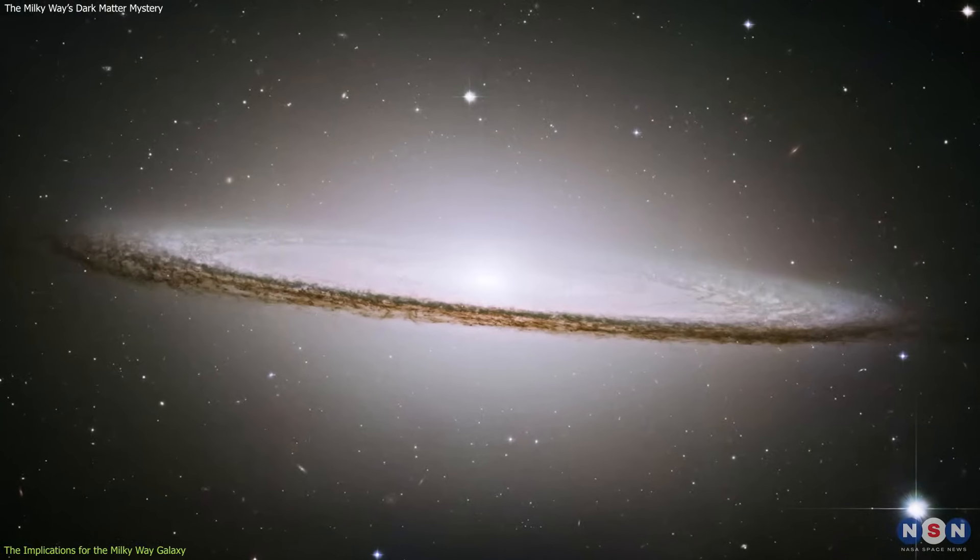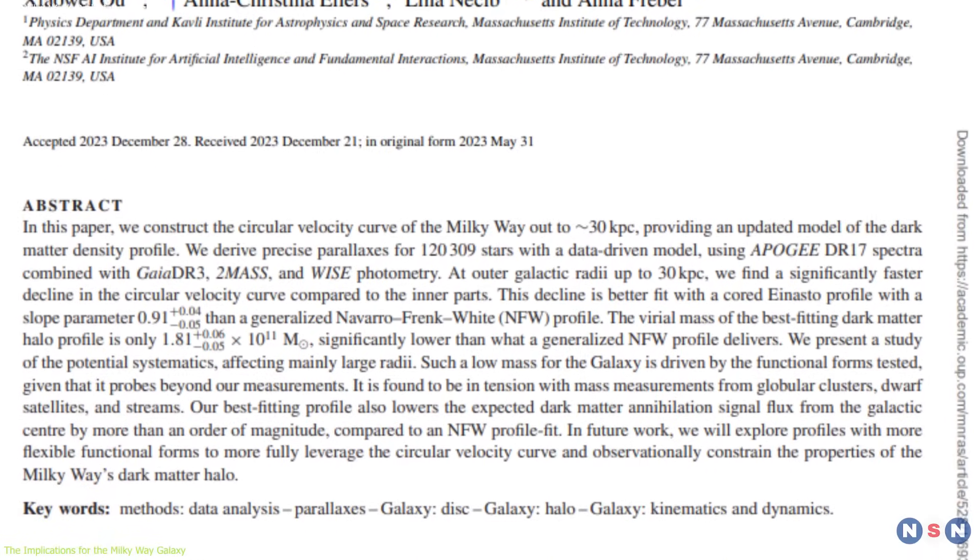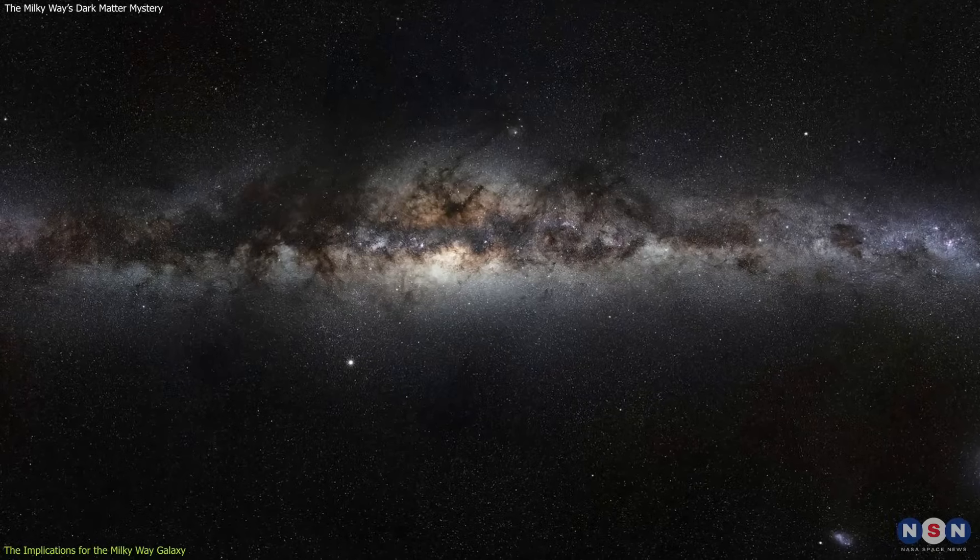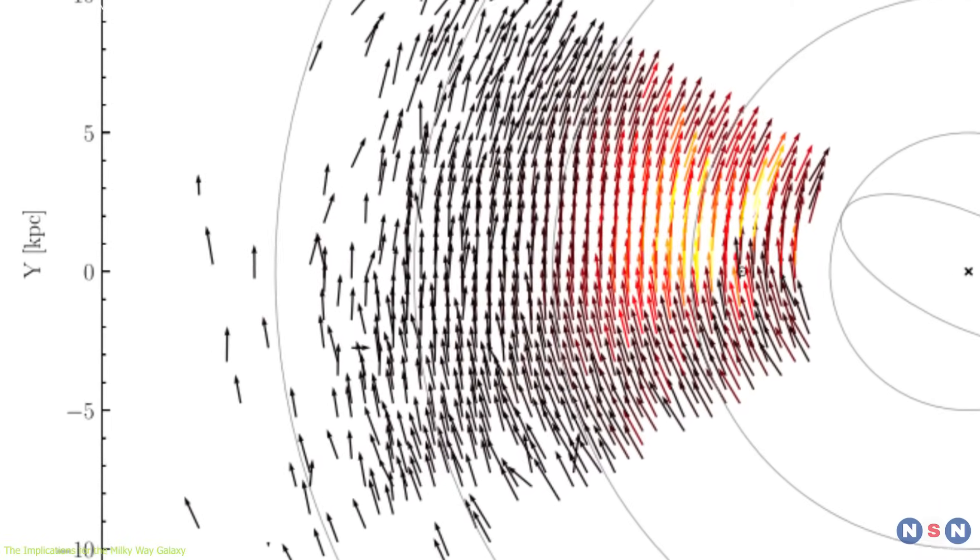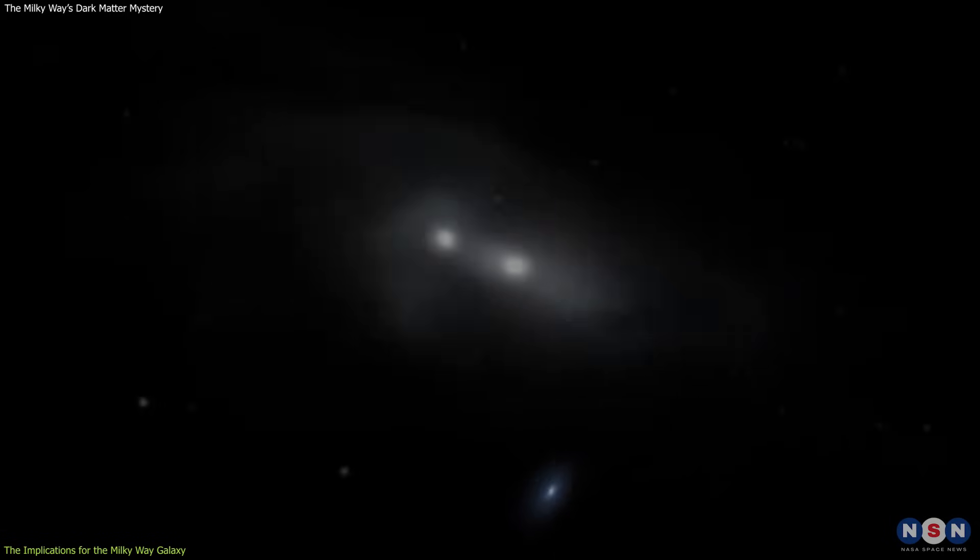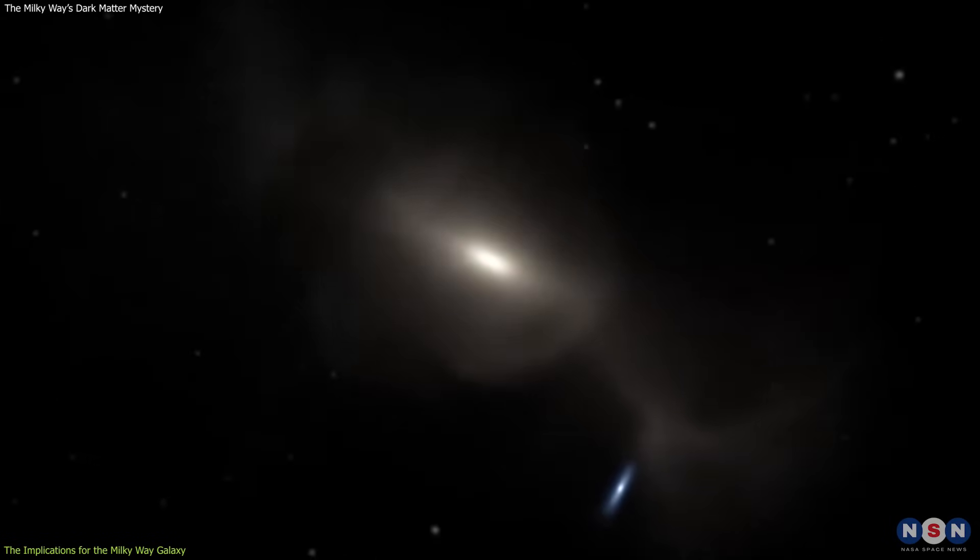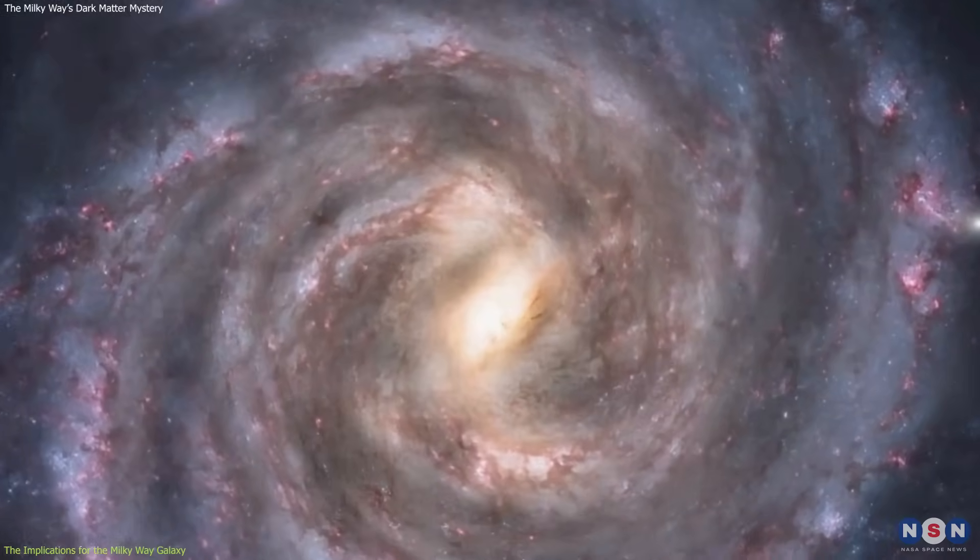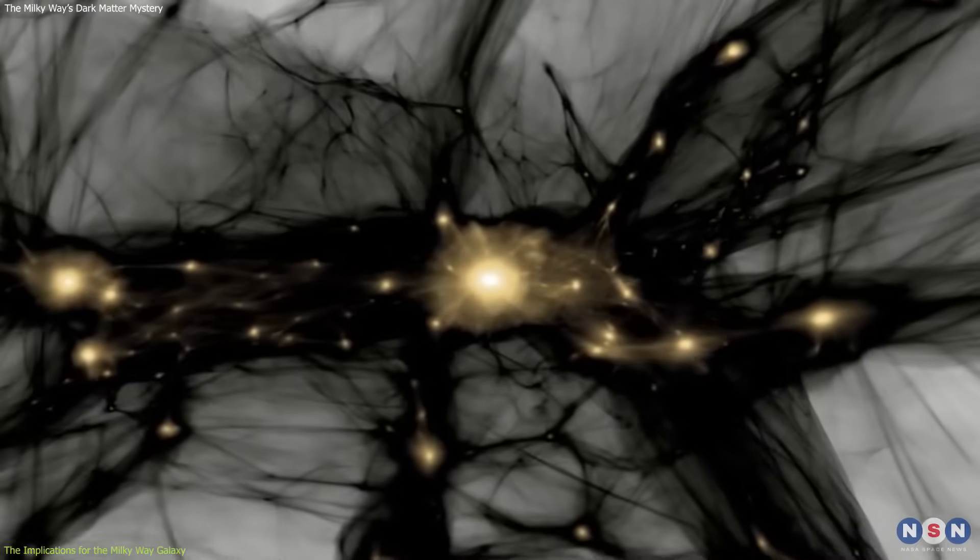The new study suggests that the bulge of the Milky Way galaxy may be less massive and less dark than previously thought, based on the slower velocities of the stars at the edge of the disk. This has important implications for the formation and evolution of the galaxy, because the bulge is thought to be the result of the merger of smaller galaxies in the early history of the Milky Way. The mass and shape of the bulge reflect the number and type of mergers that occurred and the amount of dark matter that was involved.